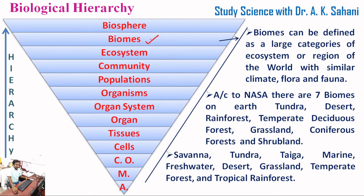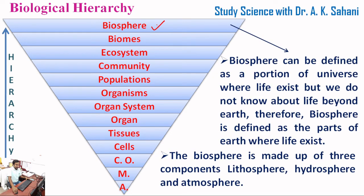The next level is biomes. Biomes can be defined as large categories of ecosystems, or regions of the world with similar climate, flora, and fauna. According to NASA there are seven biomes on Earth: tundra, desert, rainforest, temperate deciduous forest, grassland, coniferous forest, and shrubland. Today there are nine biomes recognized: savannah, tundra, taiga, marine, freshwater, desert, grassland, temperate forest, and tropical rainforest.